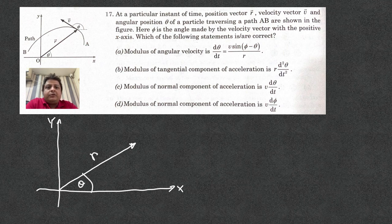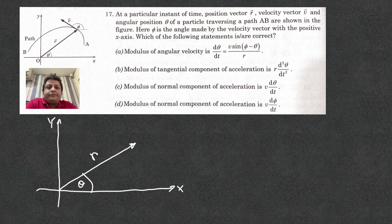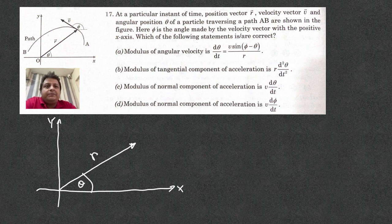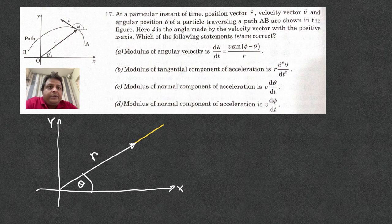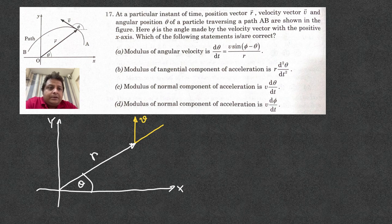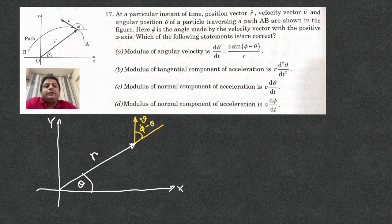For finding angular velocity, it is actually the component of v which is perpendicular to the radius vector or position vector r. So, if you stretch this line you have v. So, what does v make? This angle happens to be phi minus theta.